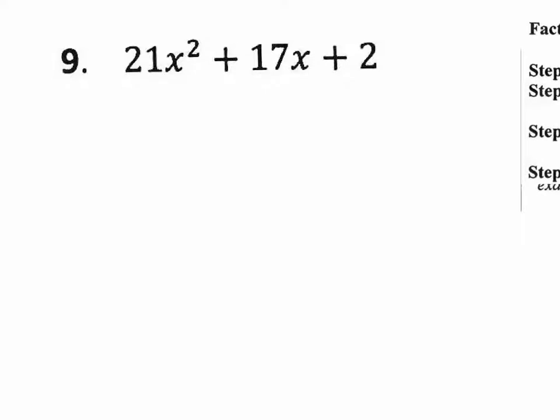Step one, and everybody should write down the steps when you're showing your work. A times C. We will get A is 21, C is 2. So we will get 42 as the answer for step one.